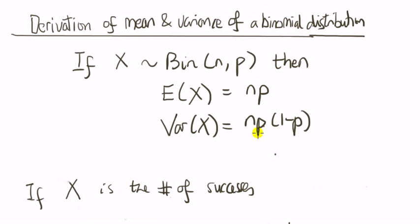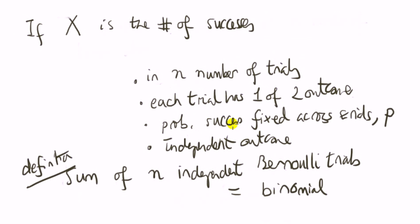Now we're going to talk about two ways of proving this, the mean and the variance. One of those ways relies on the binomial being related to the Bernoulli and the other one is a direct proof where we use the formula for the expectation of a random variable.